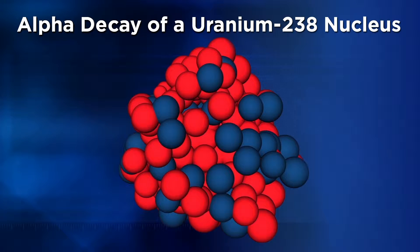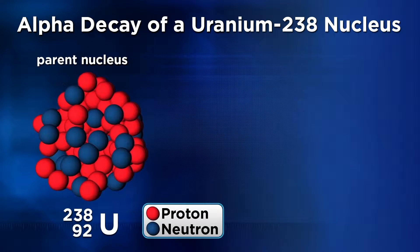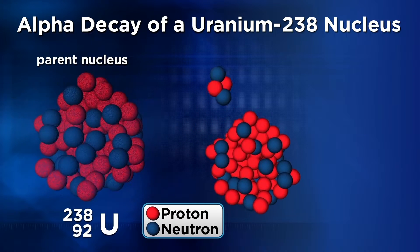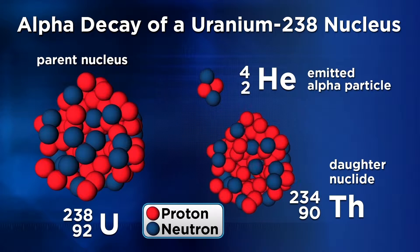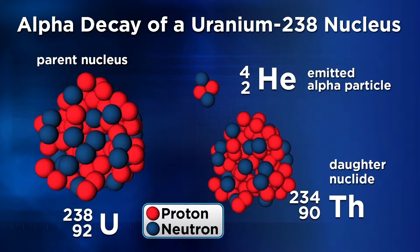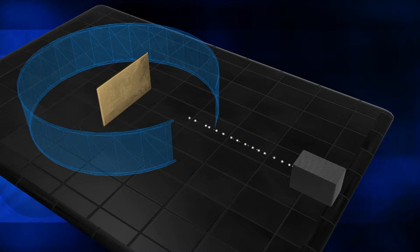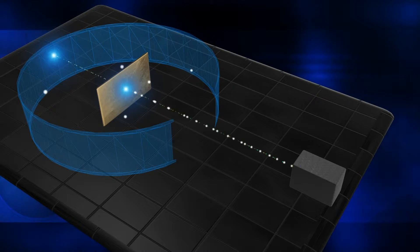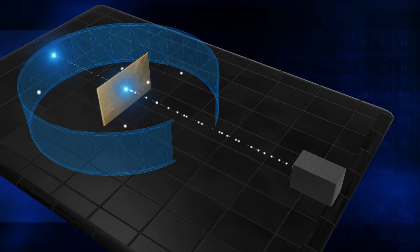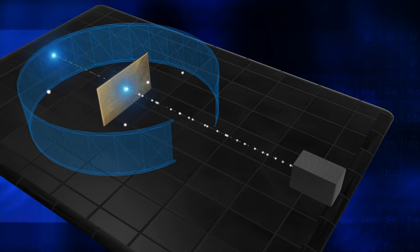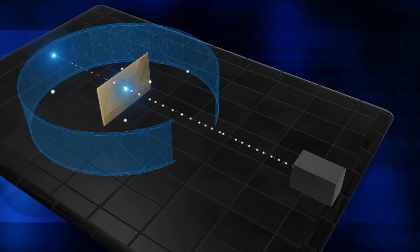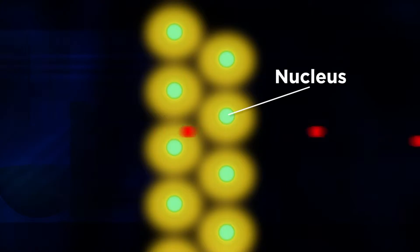Here's a diagram of a uranium-238 atom. It undergoes alpha decay, producing one alpha particle and a daughter nuclide. The alpha particle is made up of two protons and two neutrons — it's essentially a helium nucleus without the electrons, giving it a 2-plus charge. You'll recall alpha particles from Unit 3, when we studied Rutherford's gold foil experiment. The alpha particles were deflected in unexpected ways, which led Rutherford to identify the nucleus of the atom.